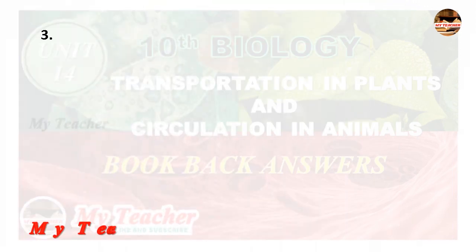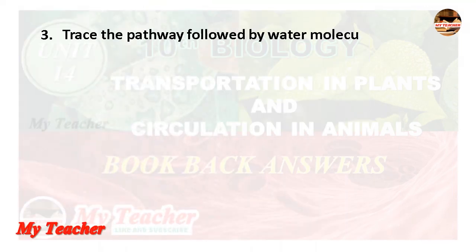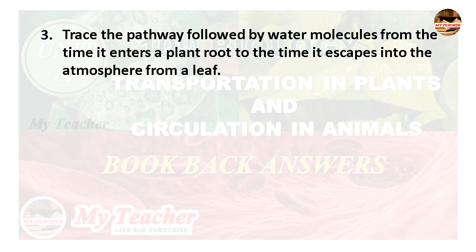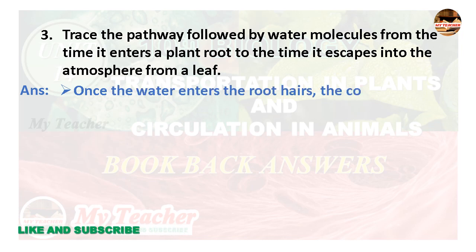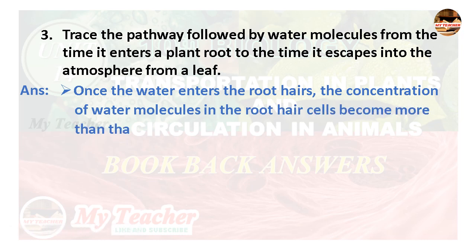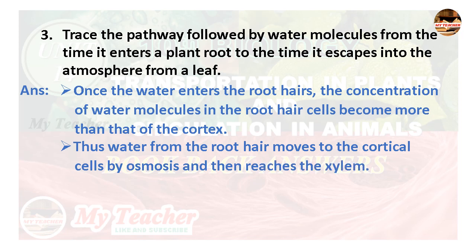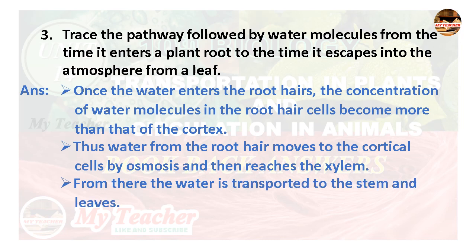Third question: Trace the pathway followed by water molecules from the time it enters a plant root to the time it escapes into the atmosphere from a leaf. Answer: Once water enters the root hairs, the concentration of water molecules in the root hair cells becomes more than that of the cortex. Water moves from the root hair to the cortical cells by osmosis, then reaches the xylem, and from there is transported to the stem and leaves.